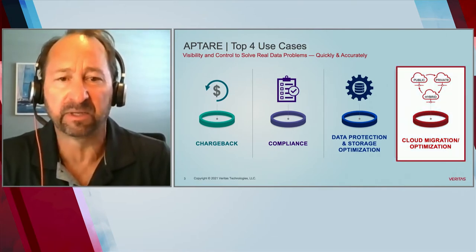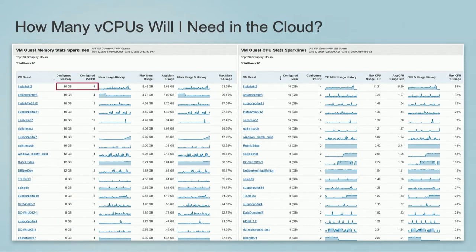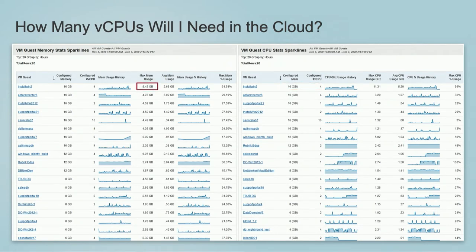We've got an example here of a report — a standard thing that Aptar has always been able to do — basically looking at your on-prem environment. In this case, we're looking at the memory statistics of various VM guests. We gather data from your VMware environment and can look at not only how many vCPUs are configured and how much memory is allocated, but also what its consumption and usage was over a period of time. With that information, customers used to use it for various things, and now we can take that same information and use it to help with cloud migration. If you notice on this system, it has a bunch of CPUs configured but hasn't really used all that much. We then take that information and ask: how would that look if we lifted and shifted it to the cloud?